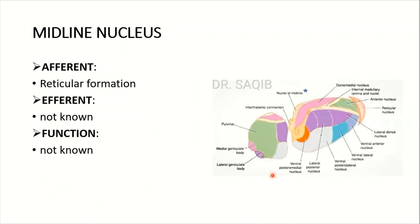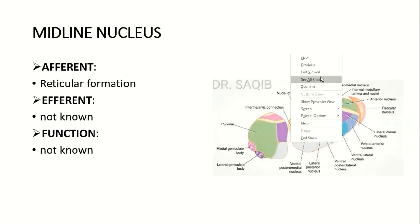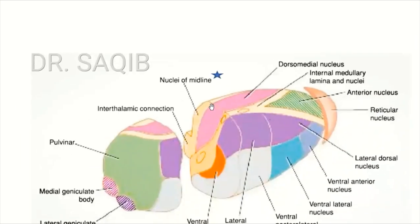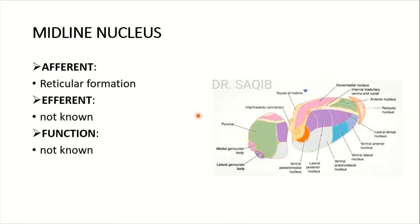The midline nuclei: these are the nuclei of the midline. Their afferents come from the reticular formation. Their efferents and function are not known.